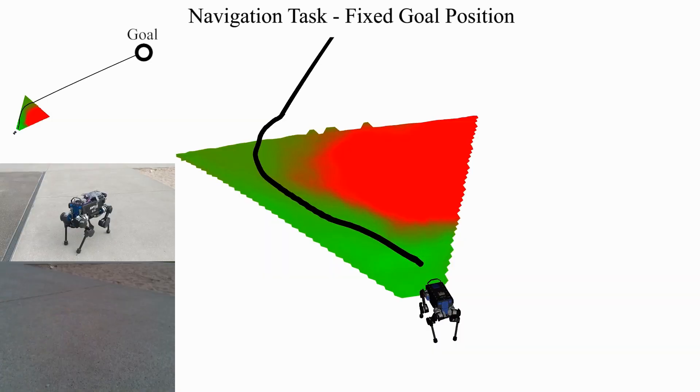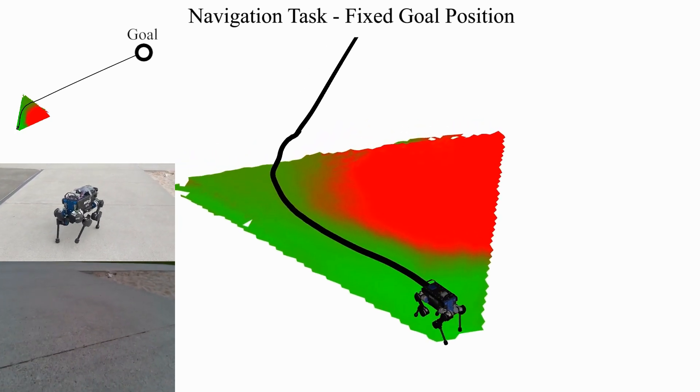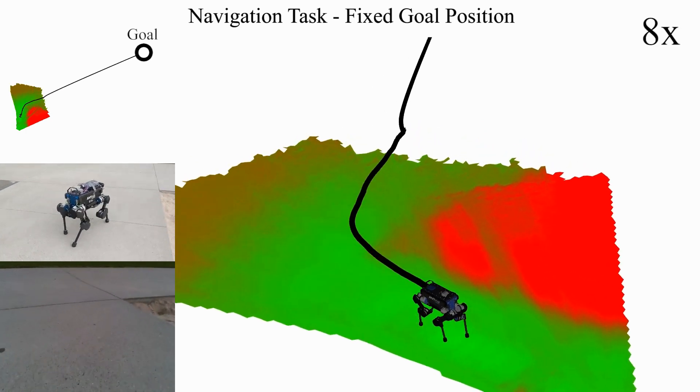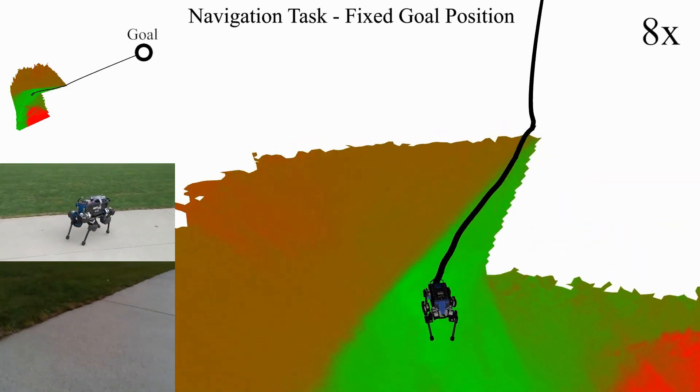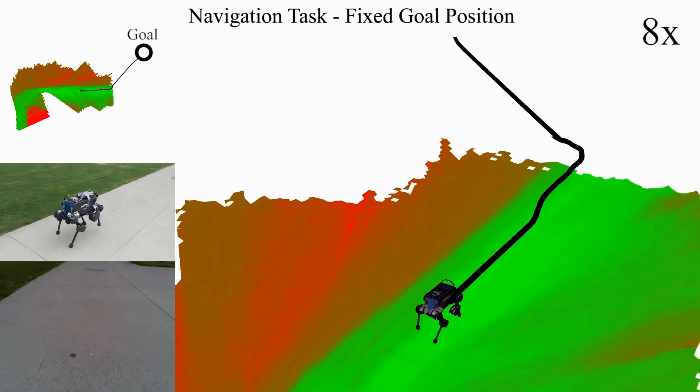We verified our approach in a navigation experiment using a path planner based on the ground reaction score. The robot identifies a difficult to traverse sandpit and circumvents it to reach its goal while preferring asphalt over grass.